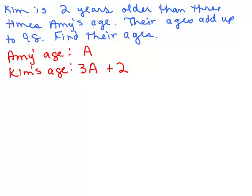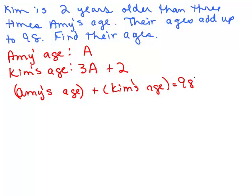Now we're going to add their 2 ages together. So we're going to take Amy's age, right? It's really telling us that her age, whatever that is, plus Kim's age, we know that's going to add up to 98.